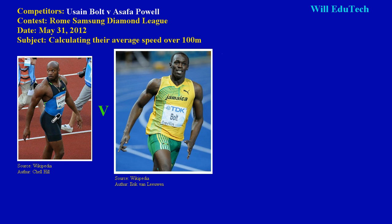Before I move on, I must show respect to the authors' work. The picture of Asafa here on my left came from Wikipedia — the author of Asafa's picture is Shell Hill, and the author of Usain's picture is Eric van. Now, the race that both men ran can be graphed.